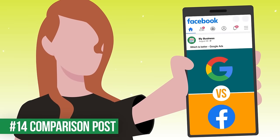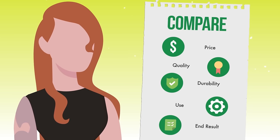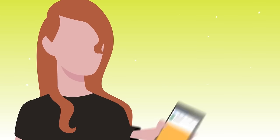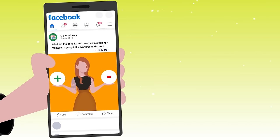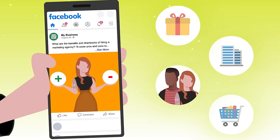Another post example is the comparison — simply comparing one thing with another, focusing on details like price, quality, durability, how it's used, or what the end result typically is. This could be for a physical product, a service, or even something unrelated to your product that your ideal client would care about. Related to this are pros and cons posts, which can relate to your products, your industry, your competitors, or things your customers are actually doing — anything that relates to your business can be explored with benefits and drawbacks.